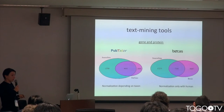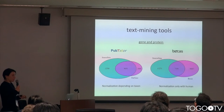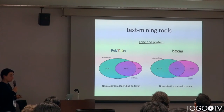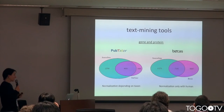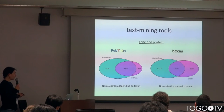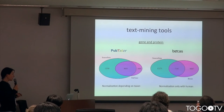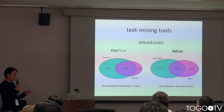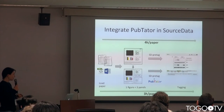Maybe SourceData didn't tag those because they were not relevant, or maybe SourceData missed those entities — we don't really know. BKS performs a little worse than Peptator because it finds many tags that are not in SourceData. Both tools find entities and propose an external ID, but normalization with BKS is done only with the human version of the ID, whereas Peptator is able to take species as a parameter and assign the correct external ID.